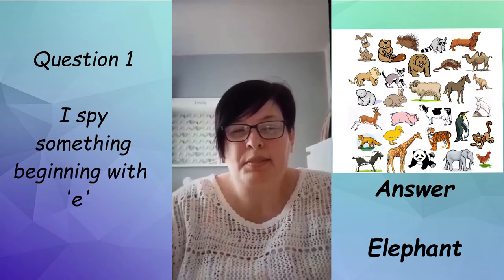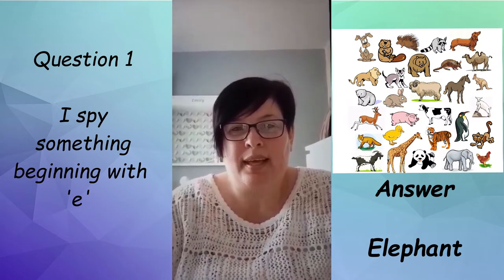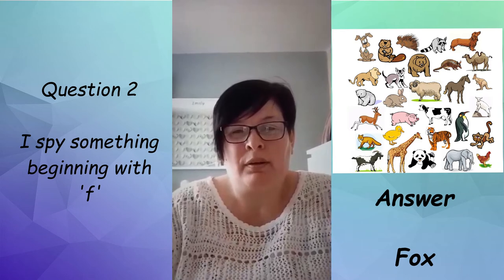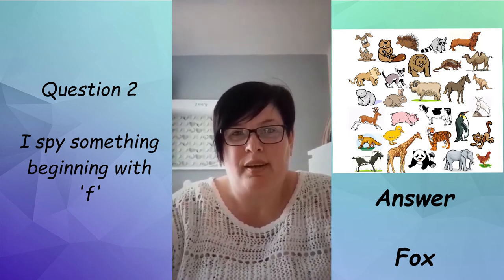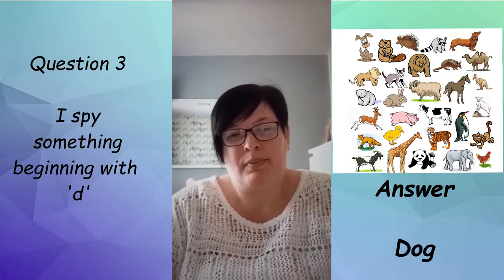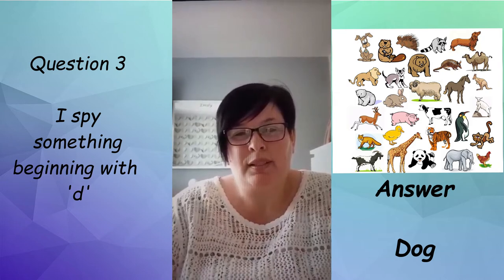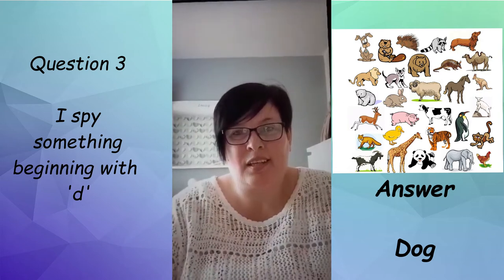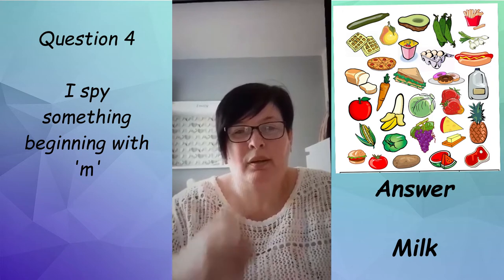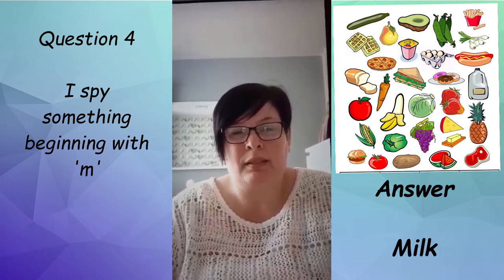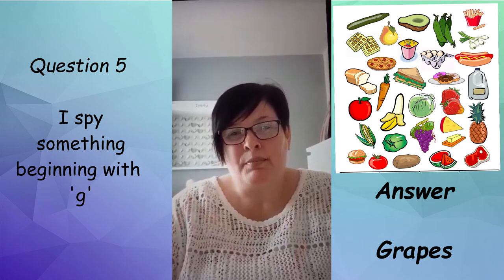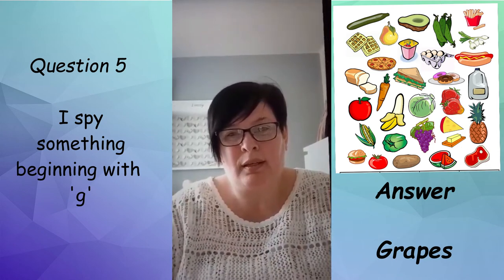Question one: I spy with my little eye, something beginning with 'e' and the answer is elephant. Question two: something beginning with 'f' and the answer is fox. Question three: something beginning with 'd' and the answer is dog. Question four: something beginning with 'm' and the answer is milk. Question five: something beginning with 'g' and the answer is grapes. Take care, see you soon.